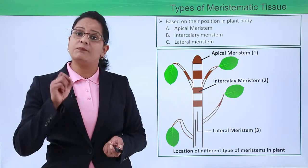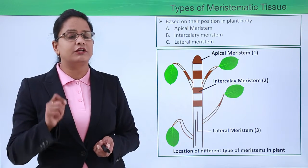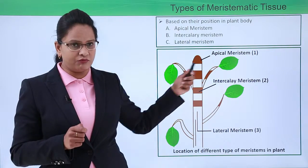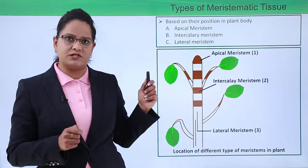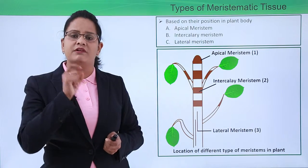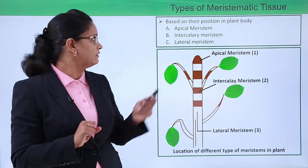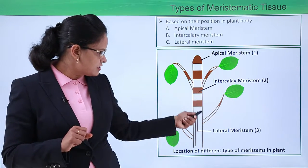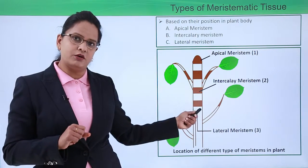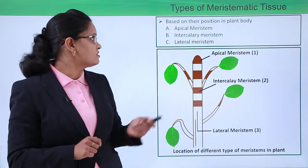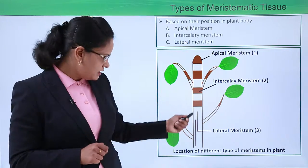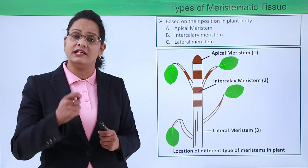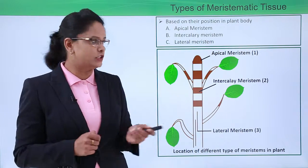On the basis of position in the plant body, meristematic tissue is further divided into three types. Apical meristem is present at the apex of the root and apex of the shoot, responsible for increase in length. Intercalary meristem is present in the internodes region — between the node and internode. Lateral meristem is present along the sides and helps in increasing the girth or diameter of the plant.